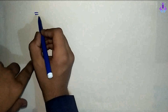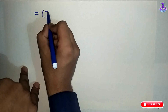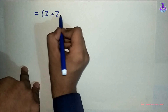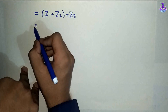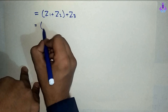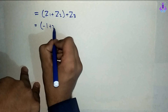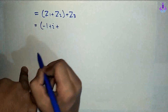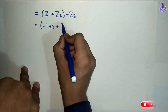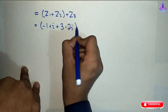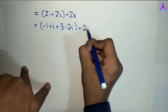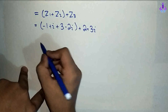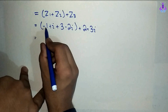Isko hum log equation 1 ka naam de dete hain. Ab hum log right hand side lete hain. RHS hamare paas hai: (z1 plus z2) plus z3. Z1 ki value minus 1 plus iota, plus z2 ki value 3 minus 2 iota, plus z3 ki value 2 plus 3 iota.